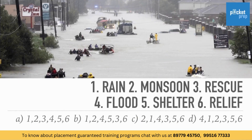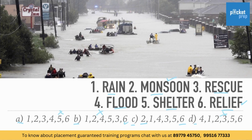Here is another question. Imagine that a locality is struck by floods. What could be the sequence of this major happening? First, read these words: rain, monsoon, rescue, flood, shelter, relief. We know that relief is the last option and monsoon is the first option as it is a season. So, look for the options where 2 is in the first place and 6 is in the last place. Here 2 is in the first place and 6 is in the last place. There are no other options as such, so this is the right answer.